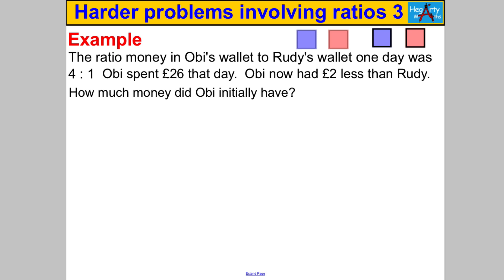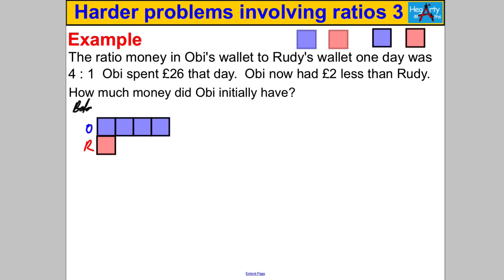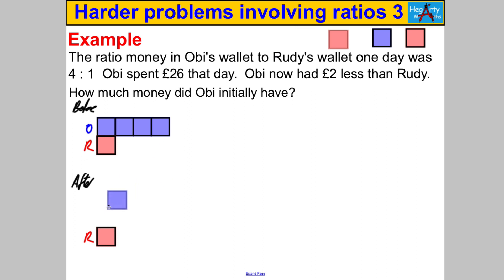Last question — pause the video and have a go. The ratio of money in Obie's wallet to Rudy's wallet was 4 to 1. There's the original picture: 4 to 1. Obie then spent 26 pounds that day and now had two less than Rudy. How much money did Obie have initially? We have a before and after situation. Rudy spent nothing, so Rudy's amount stays exactly the same.